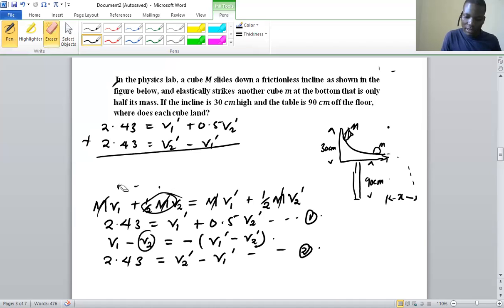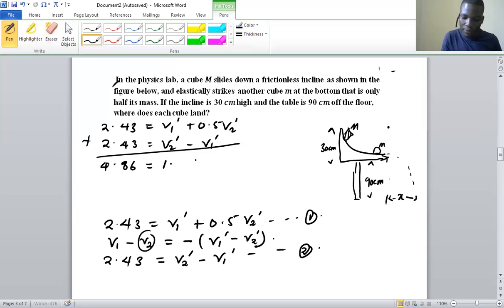So we can add the two equations. And once we add these two equations, what we are going to have is v1 prime plus negative v1 prime is going to be zero. 0.5 v2 prime plus v2 prime. So we are going to have 1.5 v2 prime.